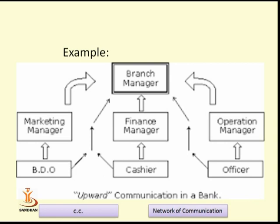Now here is an example of upward communication using a bank, which we are all familiar with. In the first level we have BDO, KCR, and Officer. BDO works under the Marketing Manager, KCR works under the Finance Manager, and Officer works under the Operation Manager. All three managers — Marketing, Finance, and Operation — work under the Branch Manager.